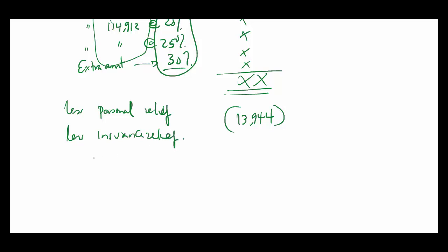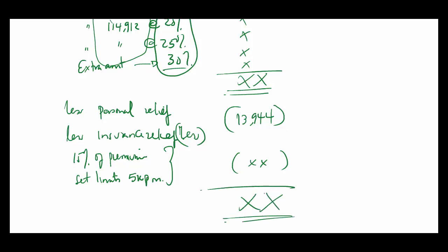Then we also less insurance relief. Insurance relief is usually based on either 15% of the premiums or the set limits, which is 5K per month, whichever is less. You are allowed to make that, so that you get what your net tax is.